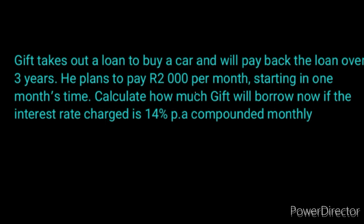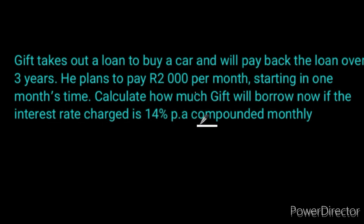Here is the final situation. Gif takes out a loan to buy a car and will pay back the loan over three years. He plans to pay 2,000 per month starting in one month's time. Calculate how much Gif will borrow now if the interest rate is charged at 14% per annum compounded monthly. So is this grade 11 or grade 12 financial mathematics?